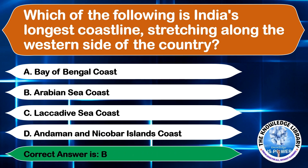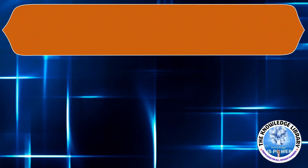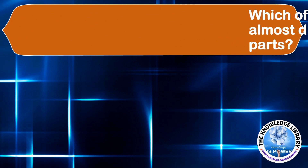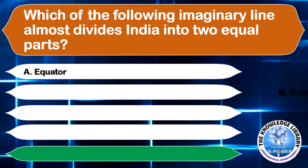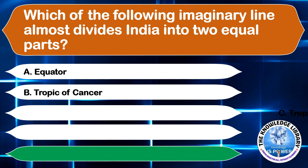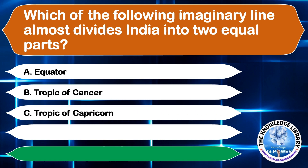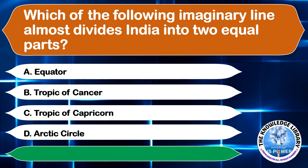Which of the following imaginary lines almost divides India into two equal parts? A. Equator, B. Tropic of Cancer, C. Tropic of Capricorn, or D. Arctic Circle. The correct answer is option B, Tropic of Cancer.